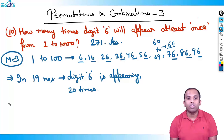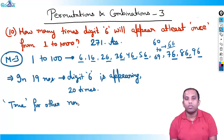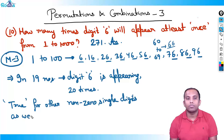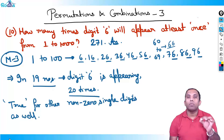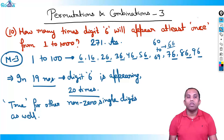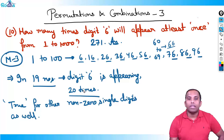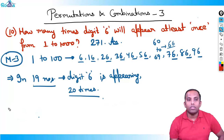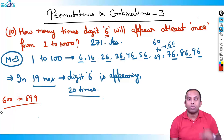In these nineteen numbers, digit six appears twenty times, because sixty-six has digit six twice — so nineteen plus one equals twenty times. This is also true for other non-zero single digits. For example, digit five will appear twenty times in nineteen numbers from one to hundred, because fifty-five is counted as one number but contains two fives.